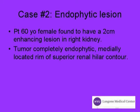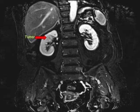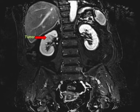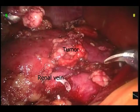Case number 2: the endophytic lesion. The patient is a 60-year-old female found to have a 2cm enhancing lesion in the right kidney. The tumor is completely endophytic, adjacent and superior to the renal hilum. Here you can see the tumor in relation to the renal vein.